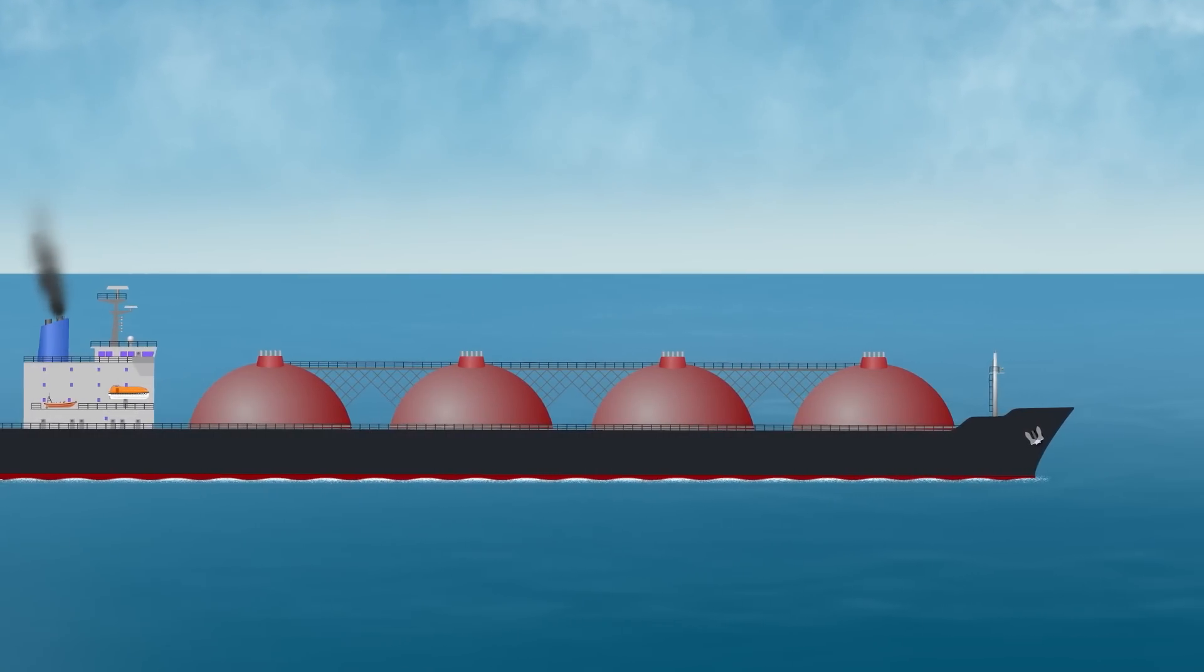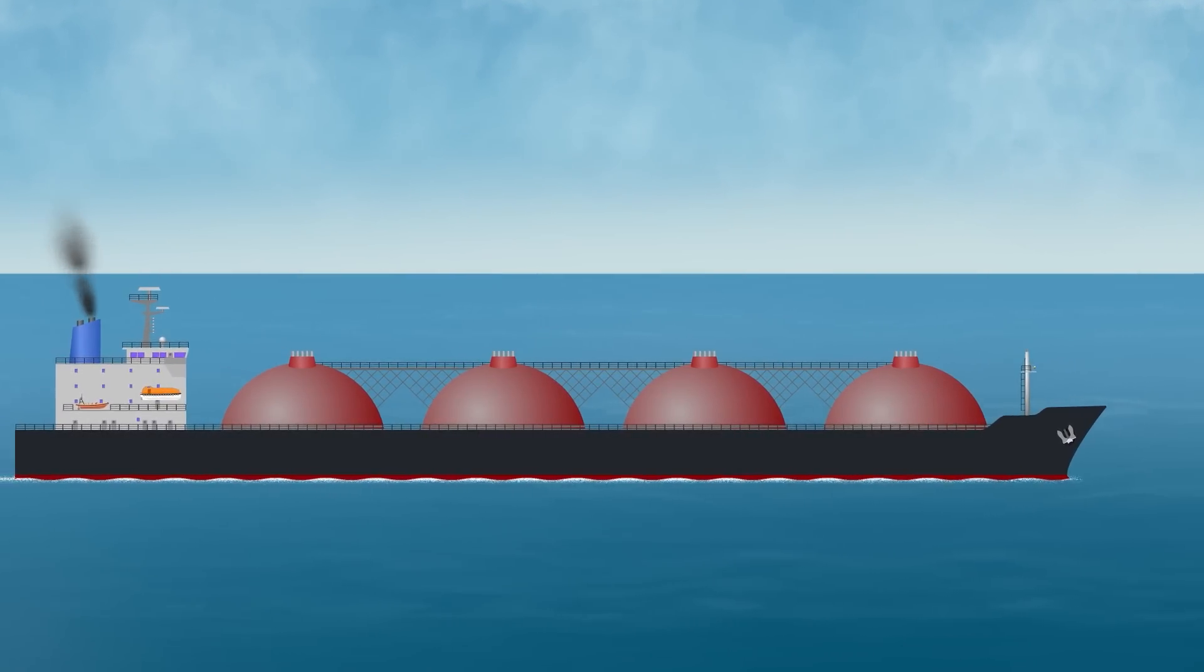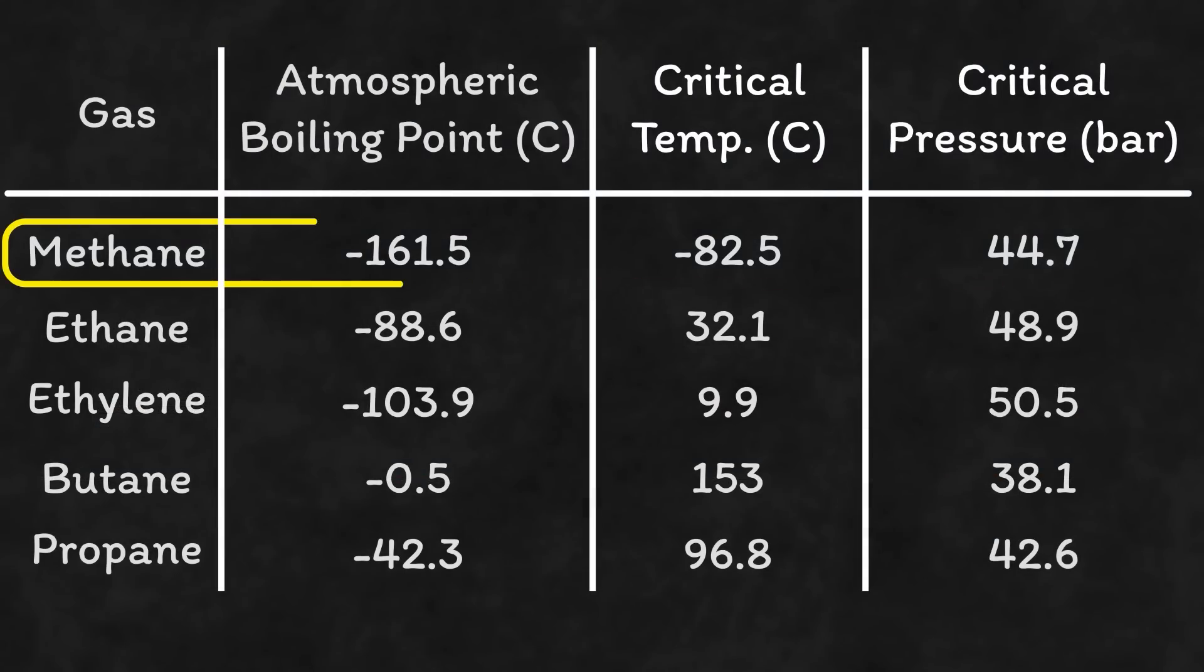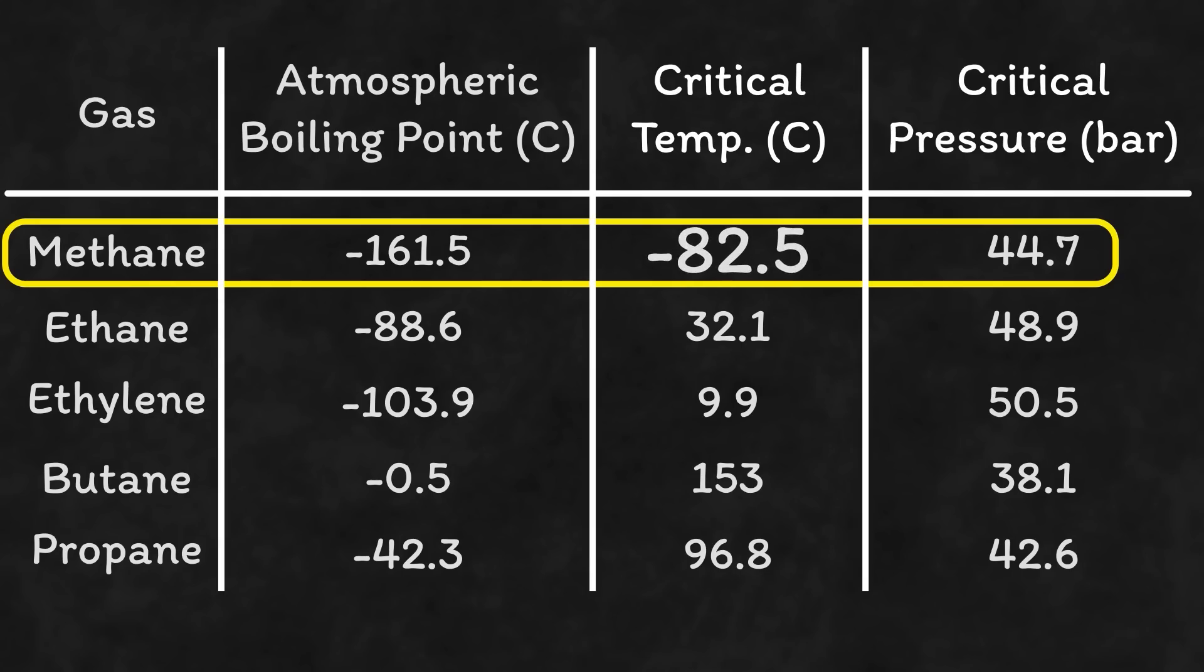Remember when I said at the beginning that a ship with humps may not be carrying methane well hopefully you can now see why. You could carry methane in liquid form using pressure alone but you would need it to withstand at least 44.7 bar of pressure and it would need to be cooled to minus 82 and a half degrees anyway.